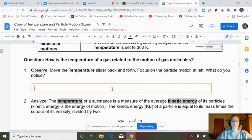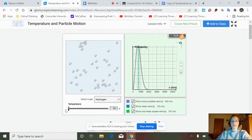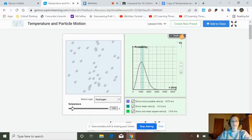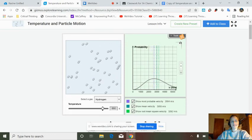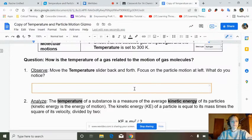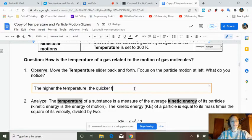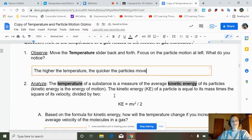Move the temperature slider back and forth. Focus on the particle motion at left. What do you notice? Let's see if we can notice what we said would happen. So here it is all the way down to 50. Slowly slide that up. Look at that. Did you notice what happened? The higher the temperature, the quicker the particles move.